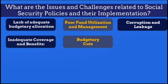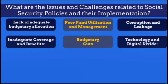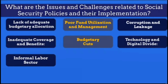Budgetary cuts — the reduction in budgetary allocations for the Mahatma Gandhi National Rural Employment Guarantee Act (MGNREGA) suggests a lack of prioritization for social welfare and rural employment generation. Technology and digital divide: many social security schemes are transitioning to digital platforms for registration and disbursement of benefits. However, a significant portion of the population, particularly in rural areas, may lack access to technology and the internet, creating a digital divide that hampers their participation. Furthermore, approximately 91% or around 475 million of India's workforce works in the informal sector, which often lacks job security, benefits, and access to formal social security programs.